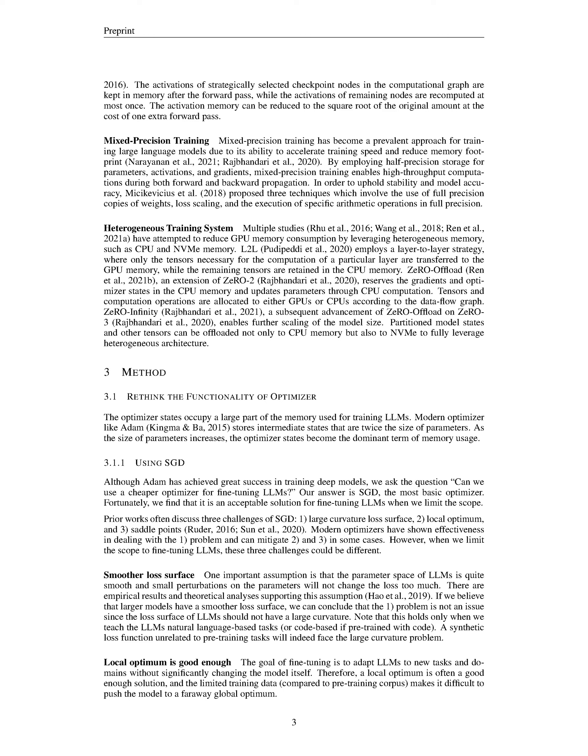However, just speeding up the process isn't enough; we need to ensure that the model maintains its stability and accuracy. For this, we employ three strategies. First, we make use of full-precision copies of weights. Second, we use something called loss scaling, which is essentially a technique to prevent small gradient values from becoming zeros due to limited precision. Lastly, we perform specific mathematical operations in full precision to avoid errors that might occur due to the reduced precision.